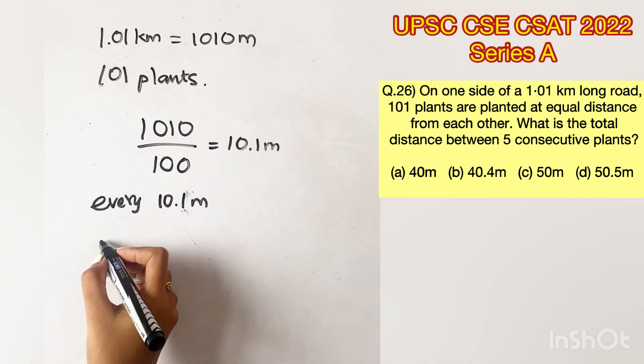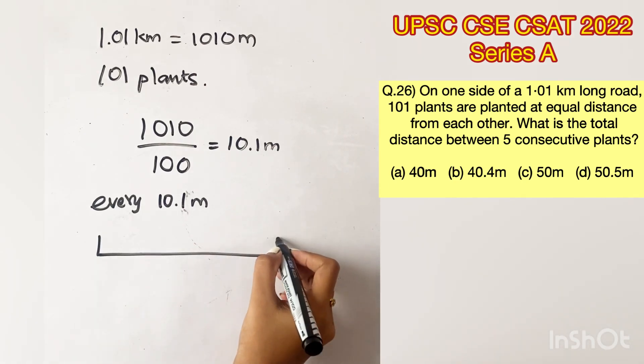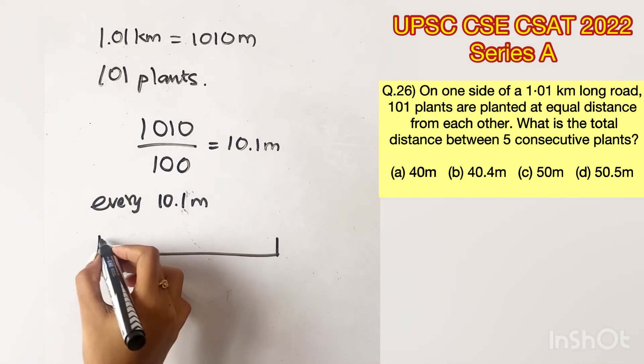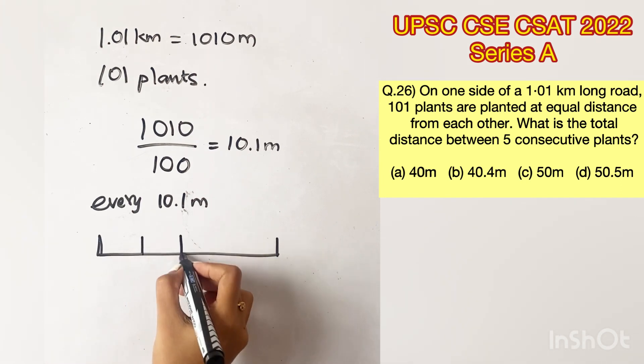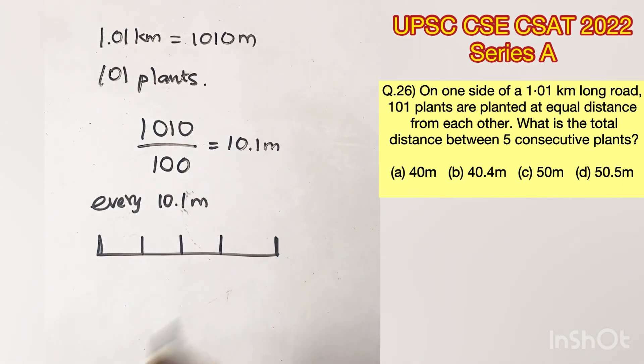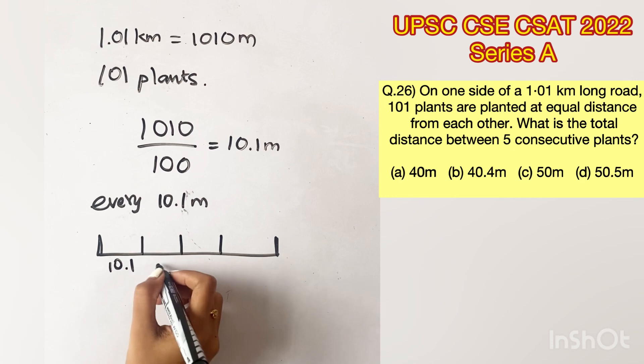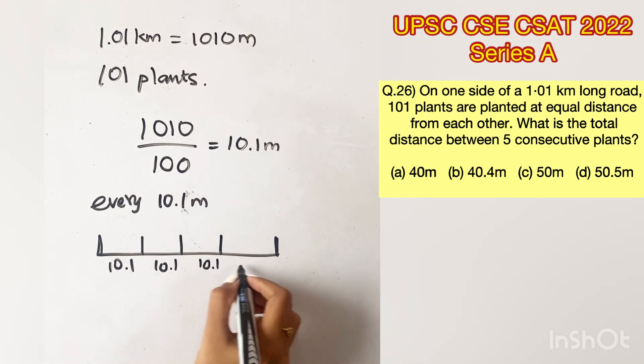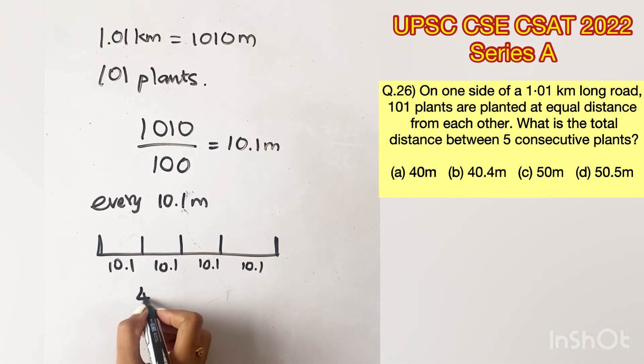Now the question is to find out the distance between 5 consecutive plants. Let's say this is the road, this is the first plant and this is the second, third, fourth and the fifth plant. Now there is a 10.1 m distance between two plants. So we have 10.1 four times which is 40.4.